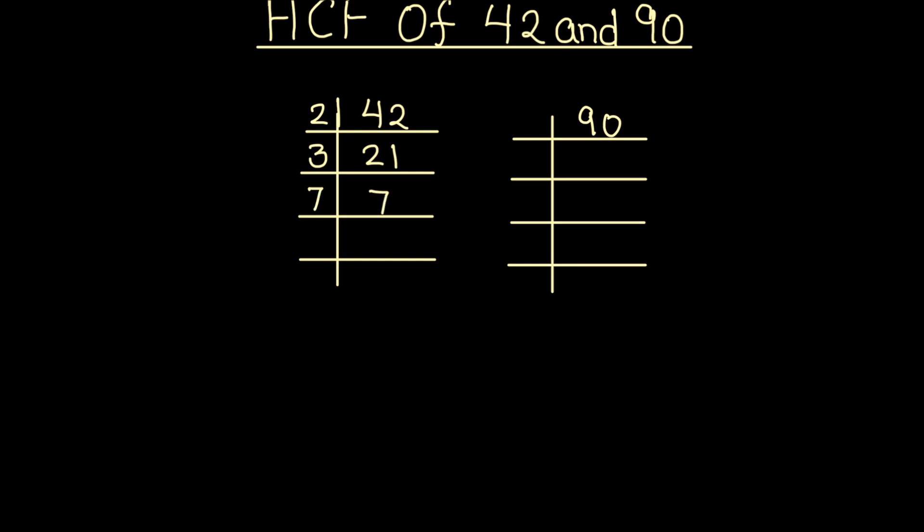Now let's divide 90. 2 times 4 is 8, 1 is remainder, this becomes 10. 2 times 5 is 10. Now 45 is odd, so we use the next prime number 3. 3 times 1 is 3, 1 is remainder, this becomes 15. 3 times 5 is 15.